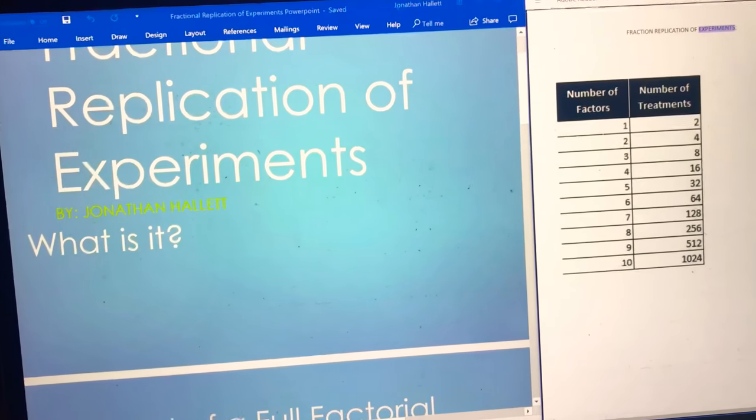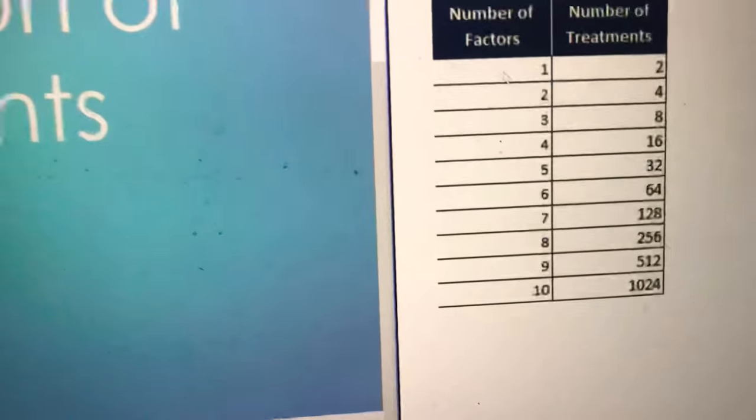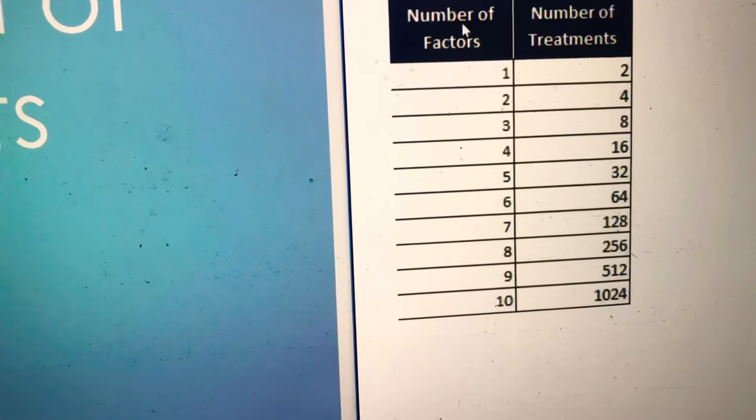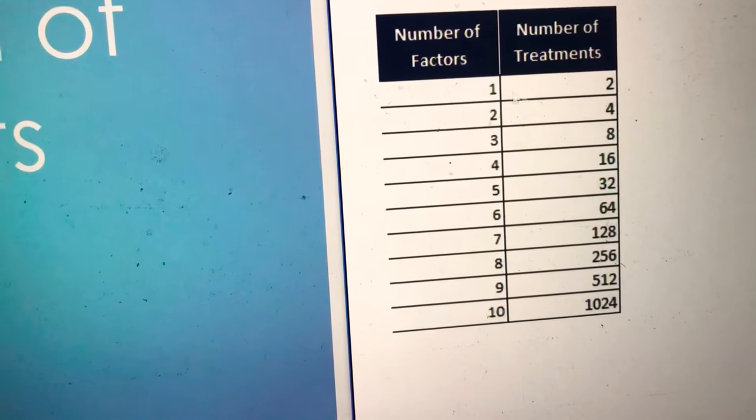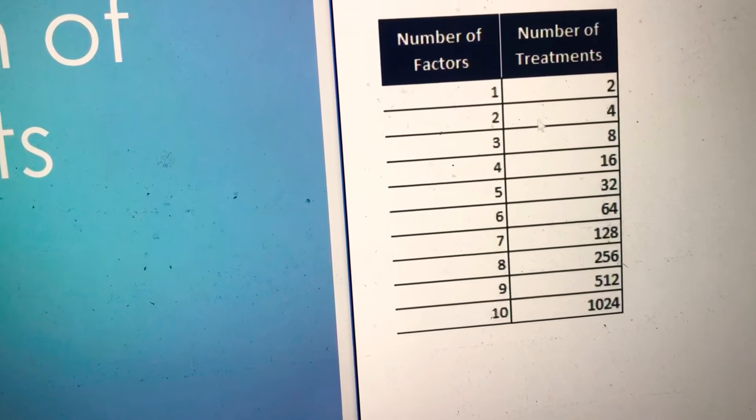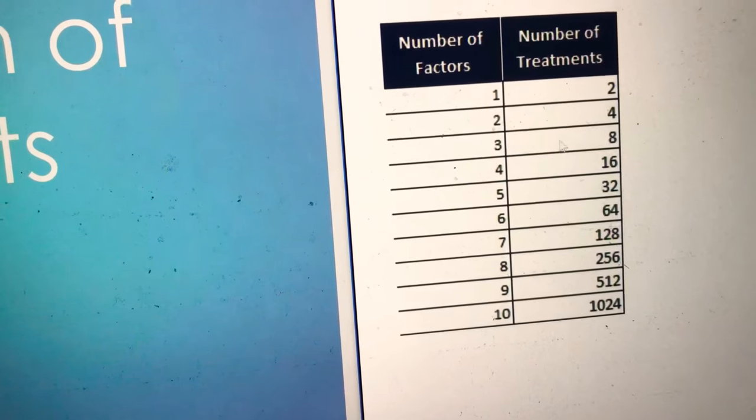Seen here, with the number of factors increasing, it goes to a 2 to the k power requirement. So 2 to the 1 would be 2, 2 squared would be 4, 2 to the 3 would be 8.